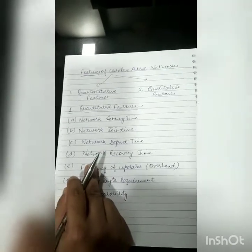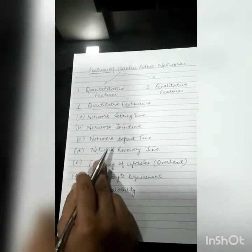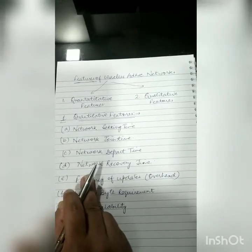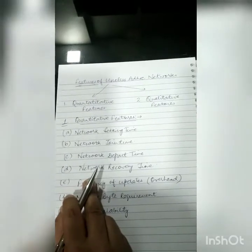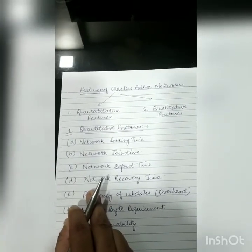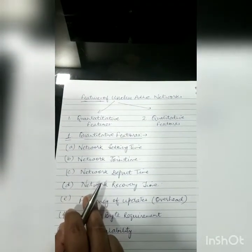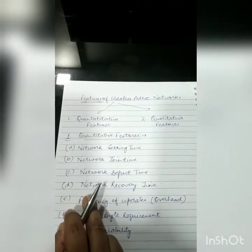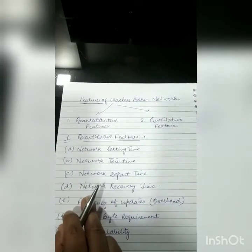The fourth one is network recovery time. Network recovery time is the time required for the network to recover after a condition — for example, a collapsed portion of the network due to traffic overload or network failure — to become functional again. It can also be the time required for the network to reorganize because of node mobility and resume reliable communication again.